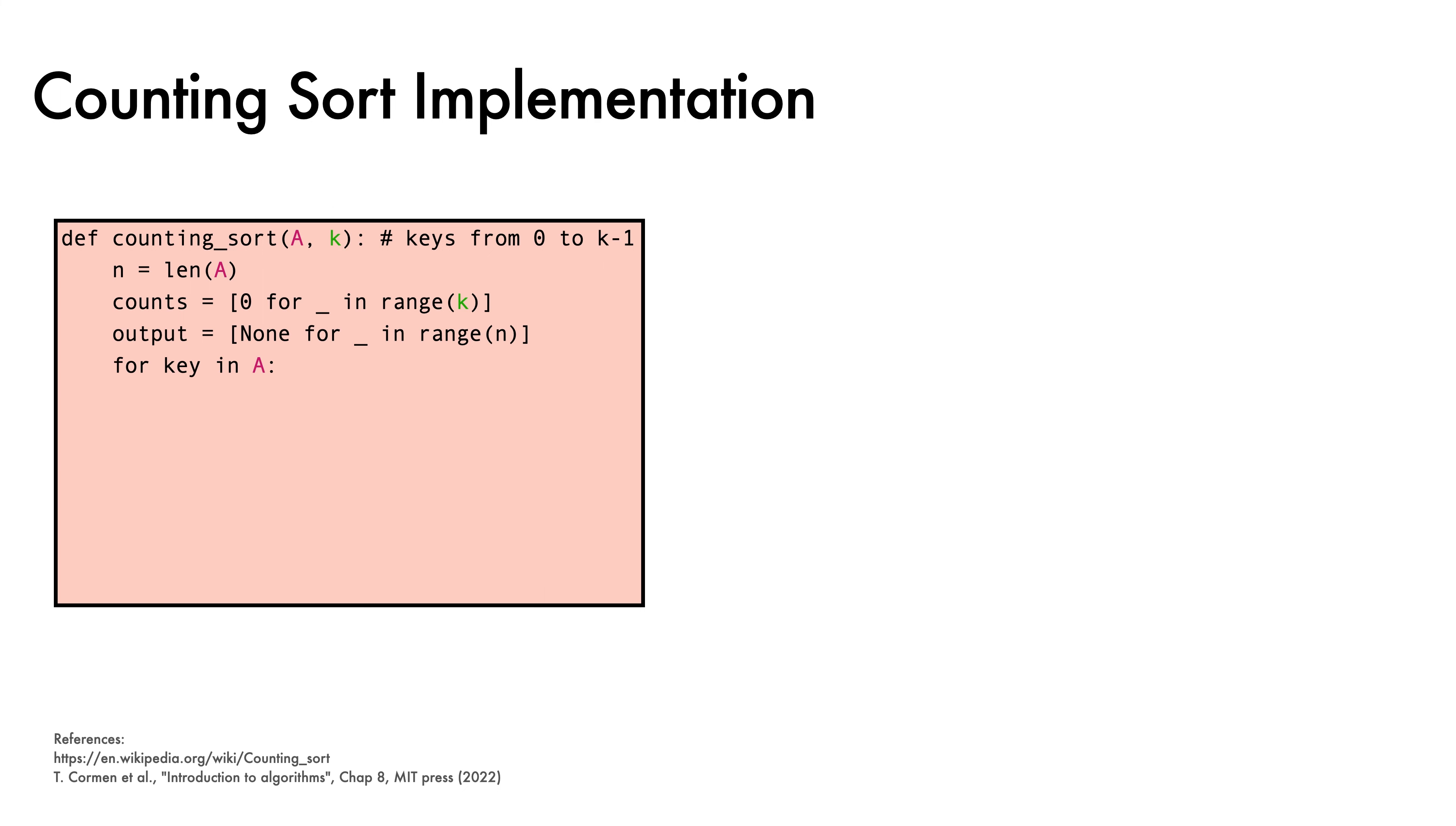Next, we loop over a, incrementing the count for each key we see. We do a second loop over the possible key values from 1 to k that updates counts to store a cumulative sum that represents the count of all keys less than or equal to the current key.